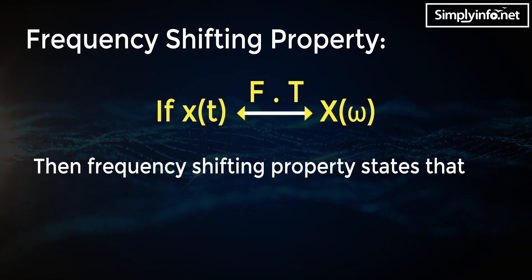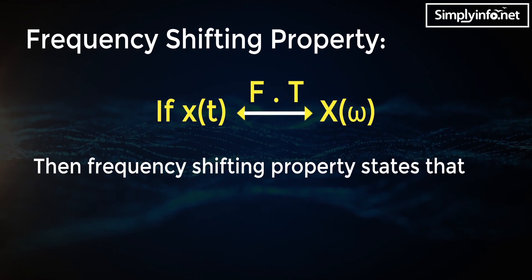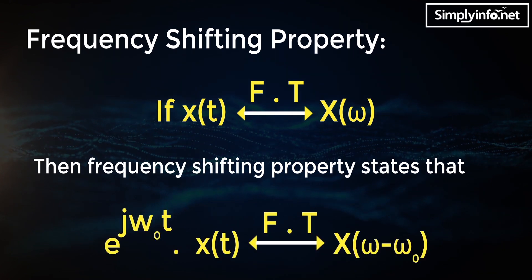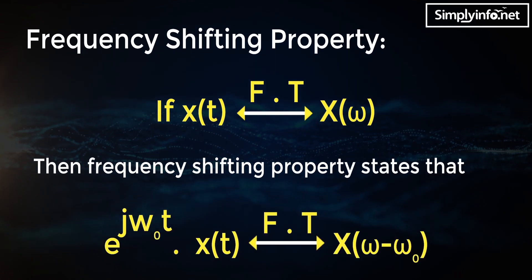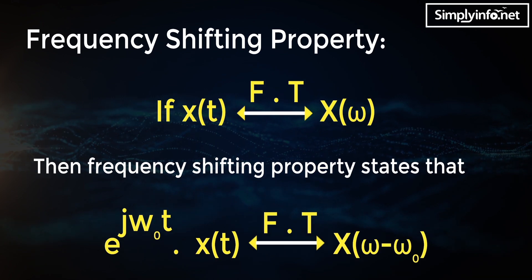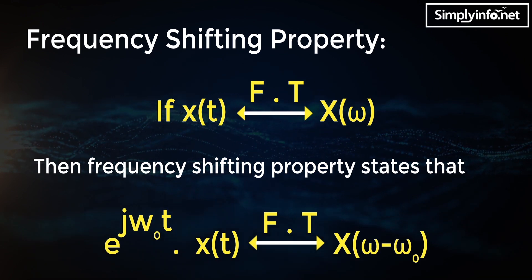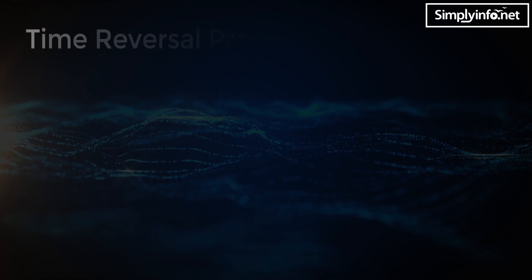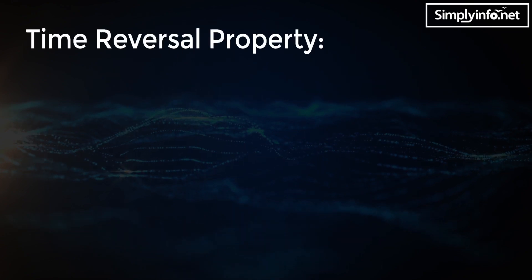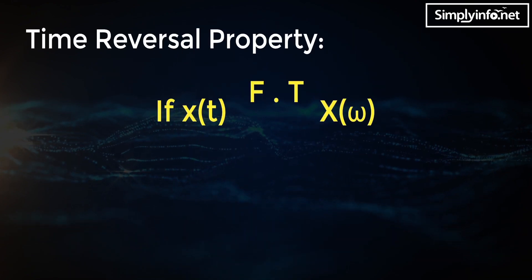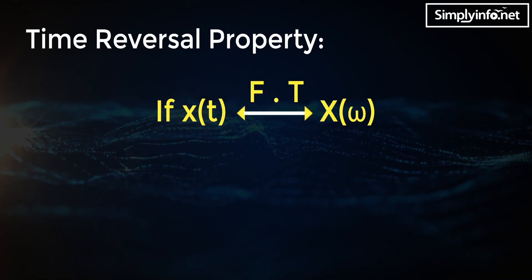Frequency shifting property: if Fourier transform of x(t) is X(ω), then the frequency shifting property states that Fourier transform of e^(jω₀t) · x(t) is equal to X(ω − ω₀).